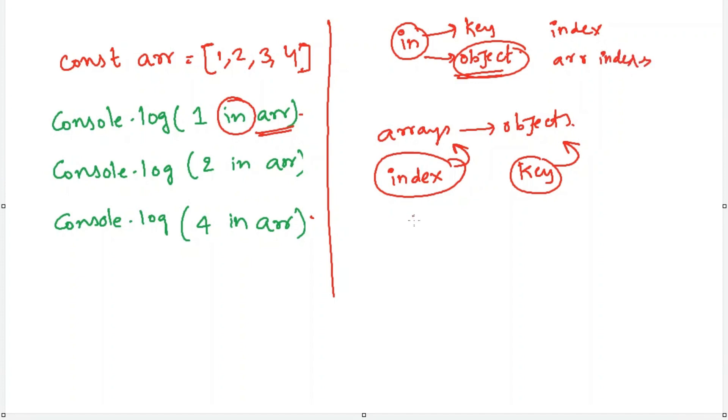So what is our array? It is 1, 2, 3, 4. So what are the indices for this array? 0, 1, 2 and 3.